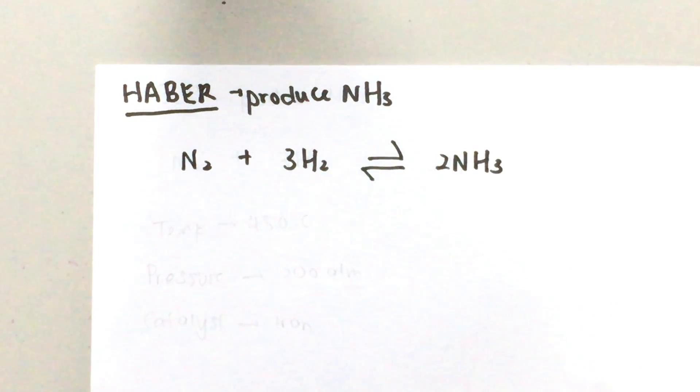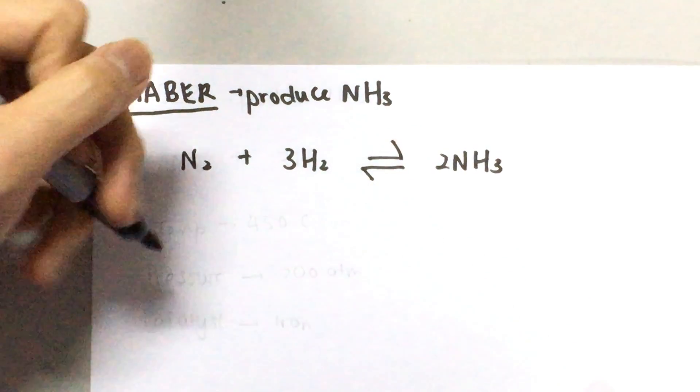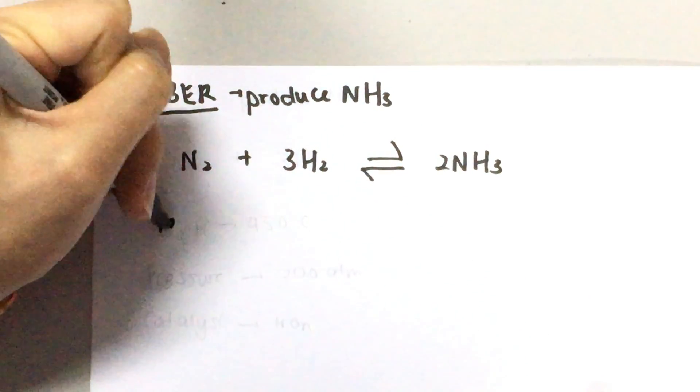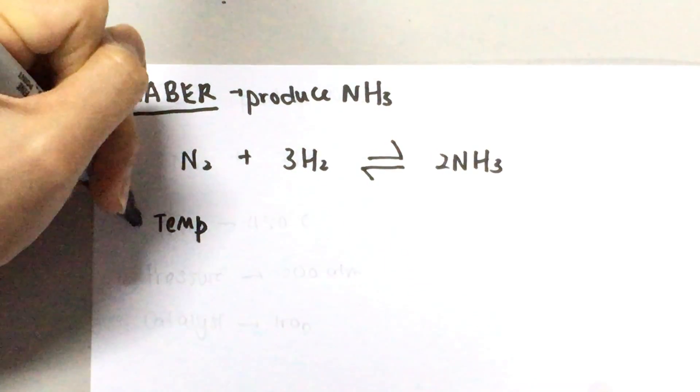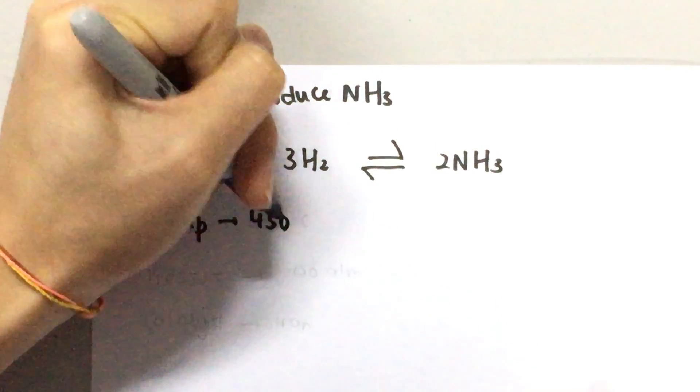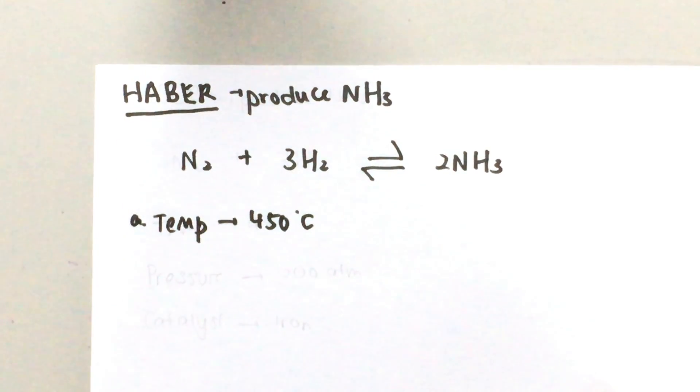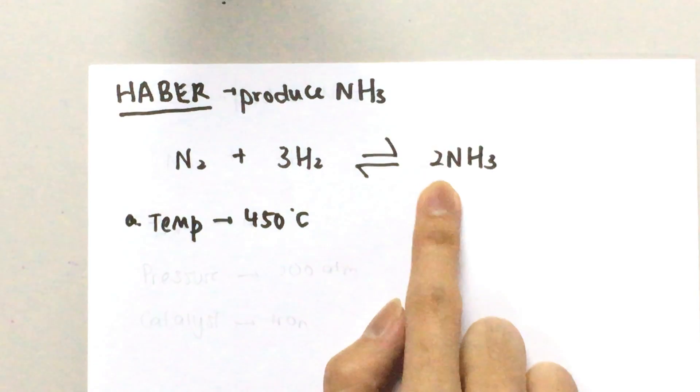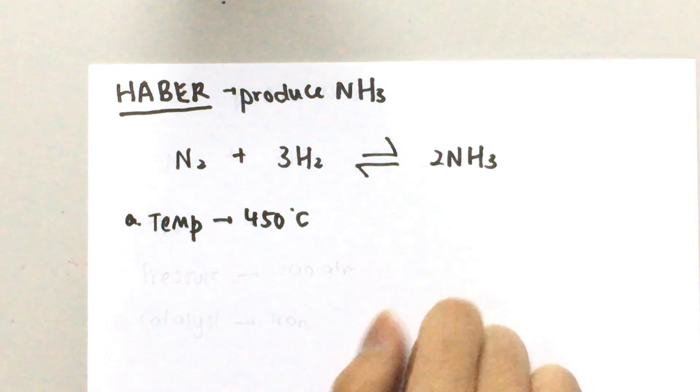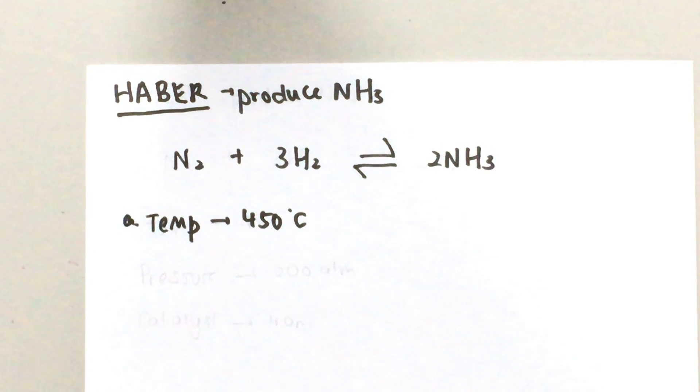Let's talk about a few conditions for the Haber process. The temperature would be around 450 degrees Celsius. The reason behind that is that the forward reaction is actually exothermic. So if we use a low temperature it would favor the forward reaction and we would get a higher yield of ammonia.